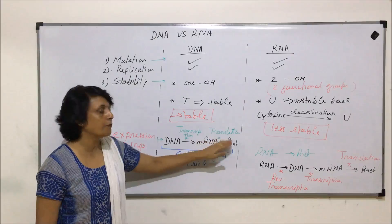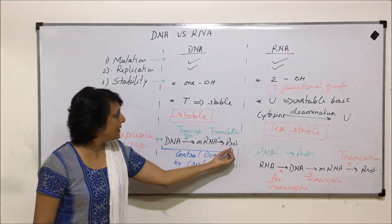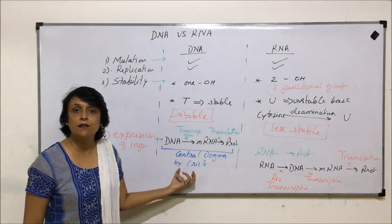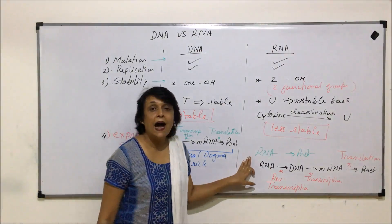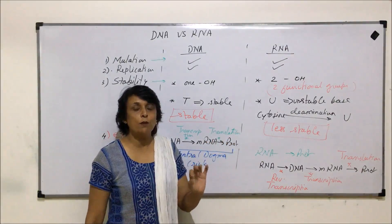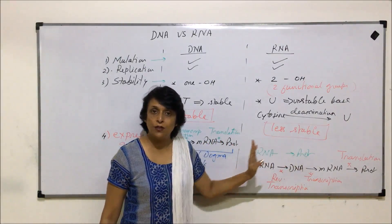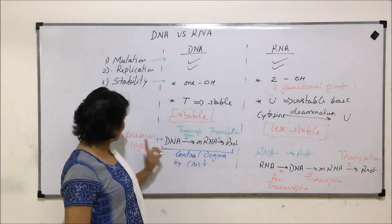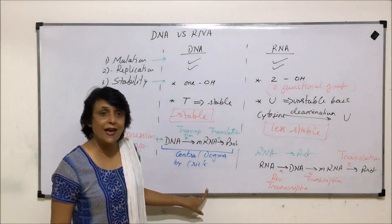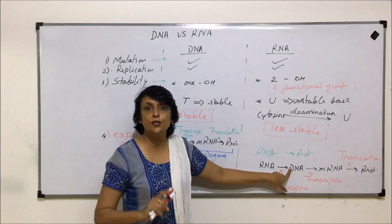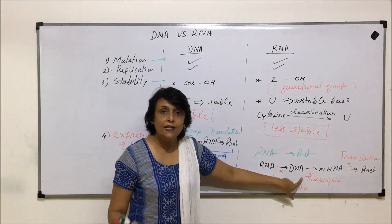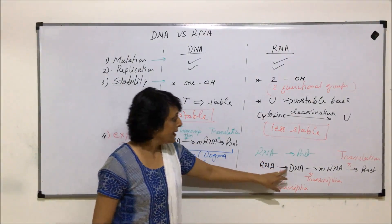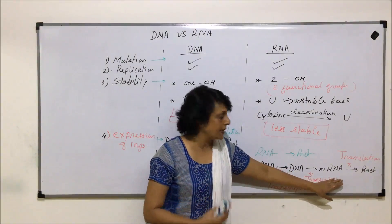Regarding expression of information: DNA translates its information in two steps — from DNA to mRNA by transcription, and then by translation proteins are synthesized. This is the central dogma given by Crick. If RNA is the genetic material, it has to undergo one additional step — reverse transcription from RNA to DNA — using a special enzyme called reverse transcriptase, before the normal transcription and translation steps proceed.